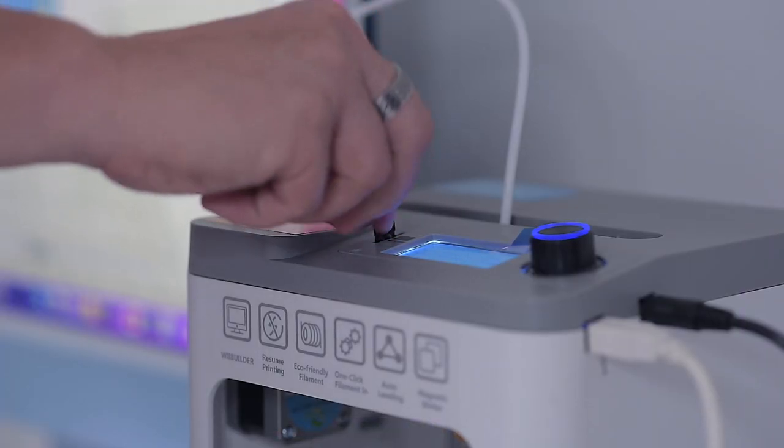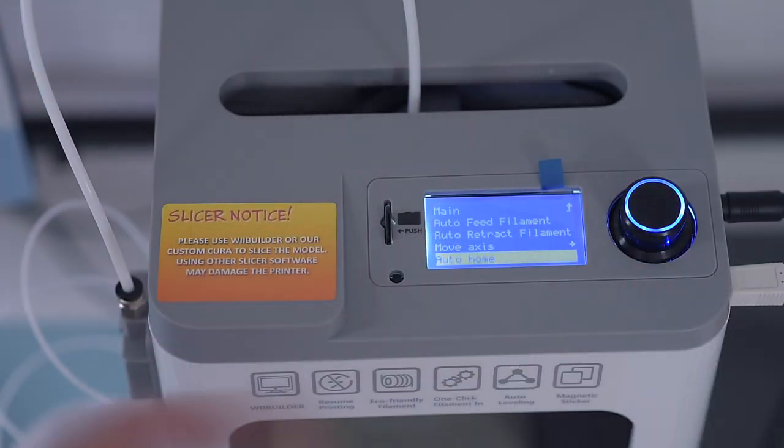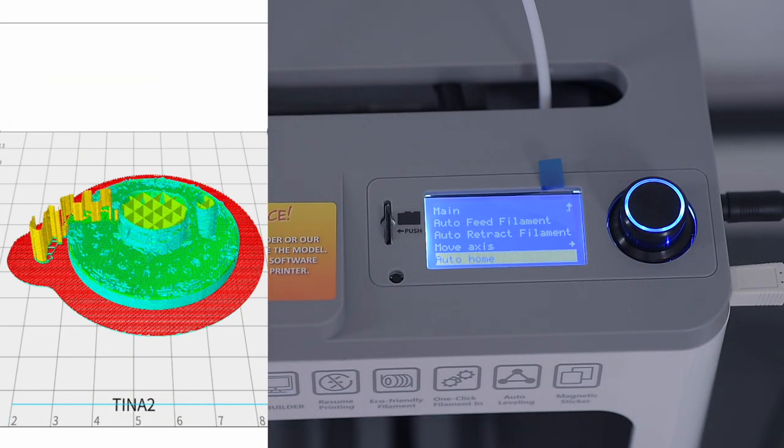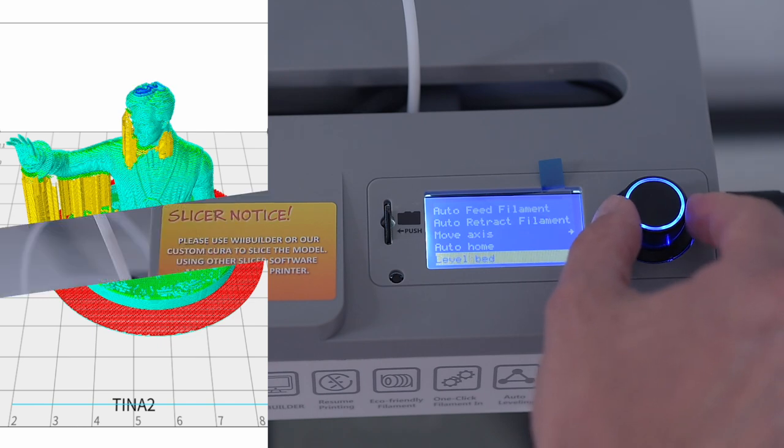Slicing translates the CAD drawing into G-code, which a 3D printer can read. Now the viking mug is ready to be printed.